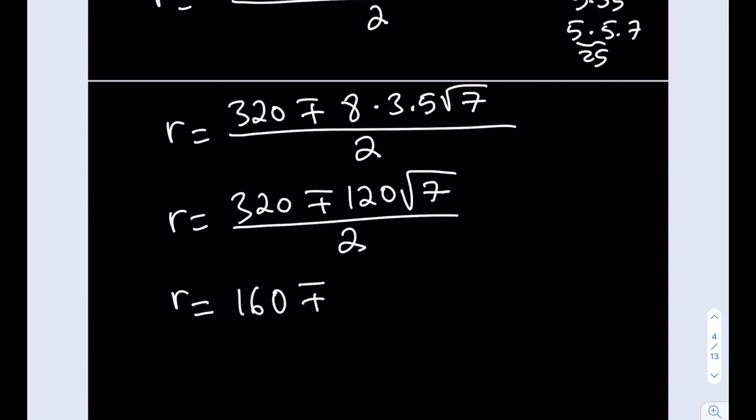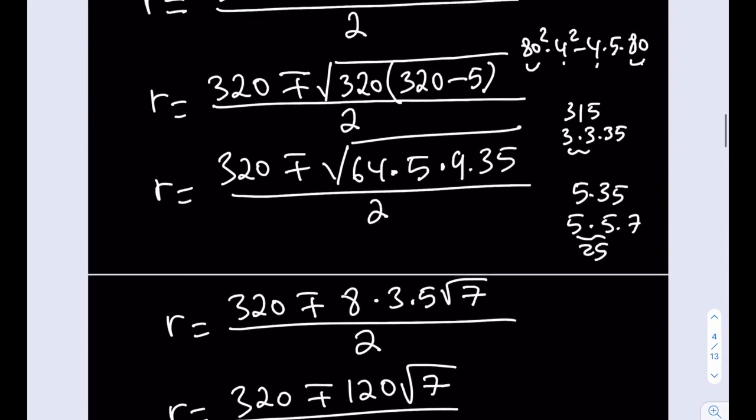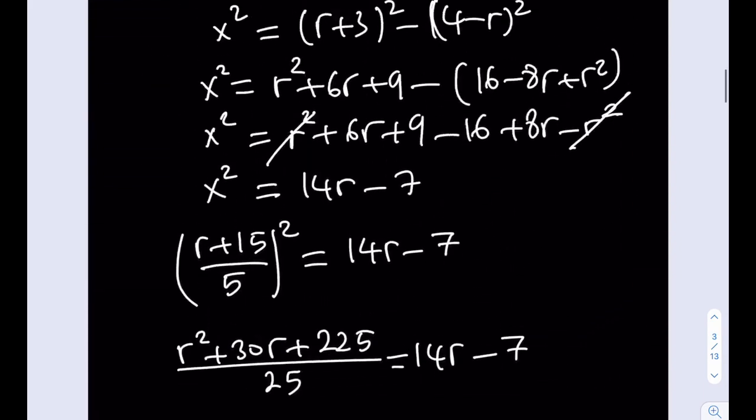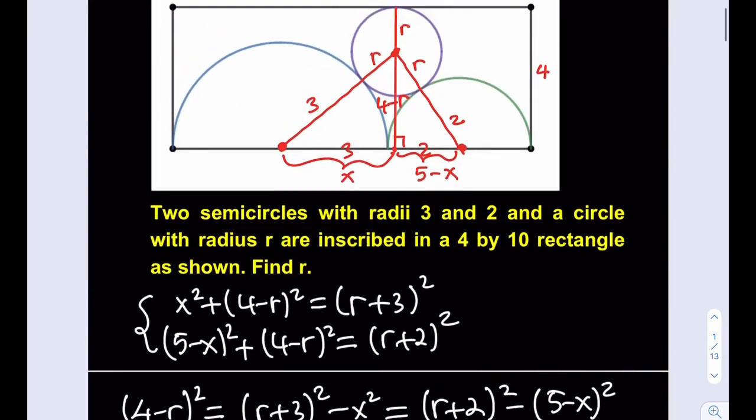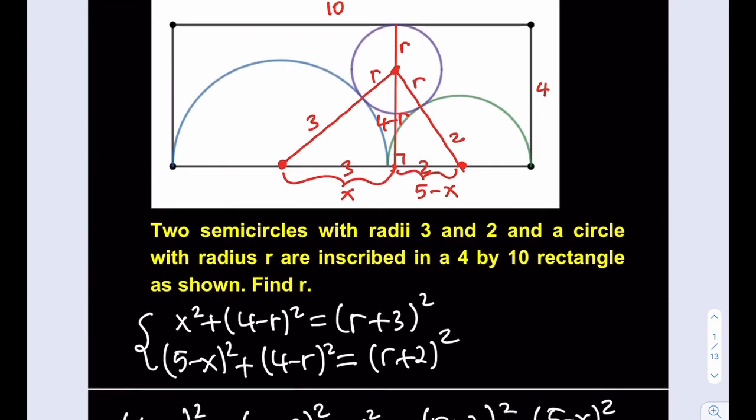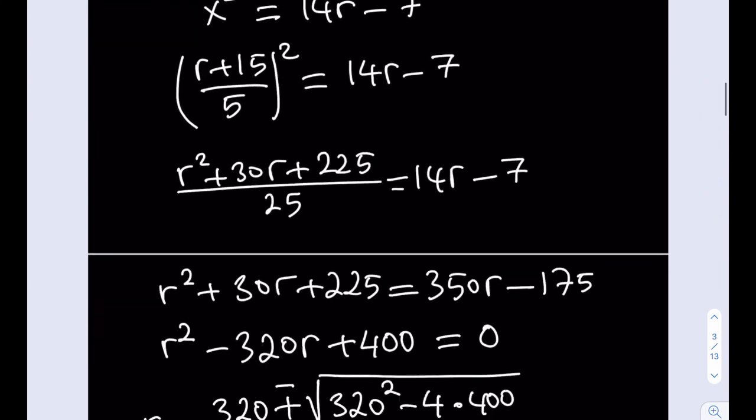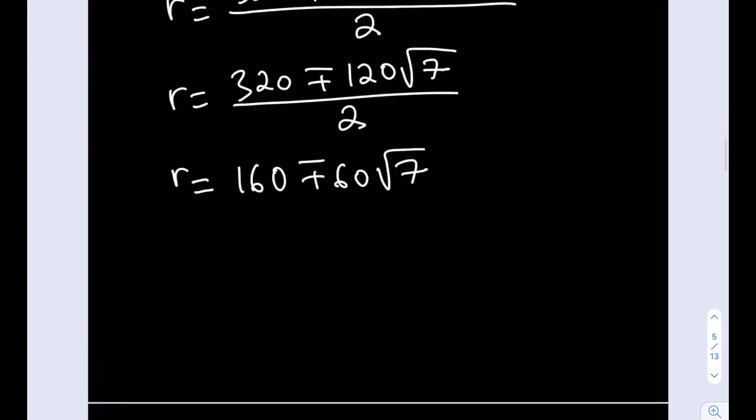We still have to decide which one is a good answer. Which one do you think is going to be the answer in this case? Well, if you think about the positive version, it's going to be a very large number. It's greater than 160. But we only have a really tiny rectangle here, which is 4 by 10. So, r is going to be definitely less than 4. You can see that. So, we're going to be going with the minus sign here. So, that's going to be our official answer. So, the radius of this infamous circle is going to be 160 minus 60 times root 7. Isn't that awesome? So radical.